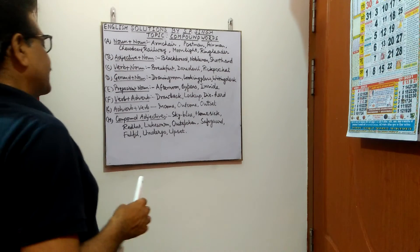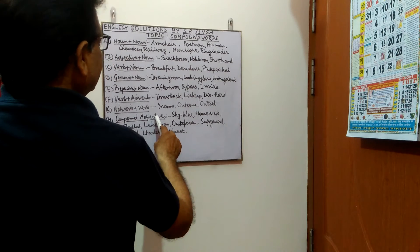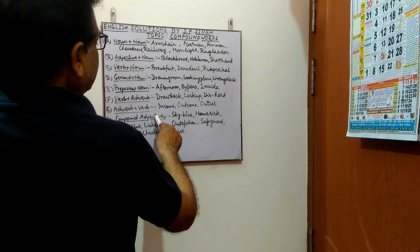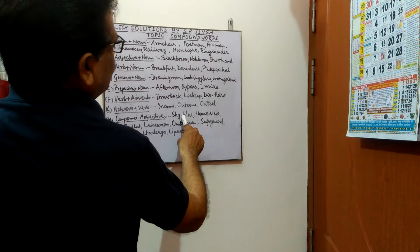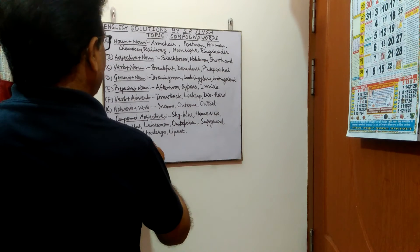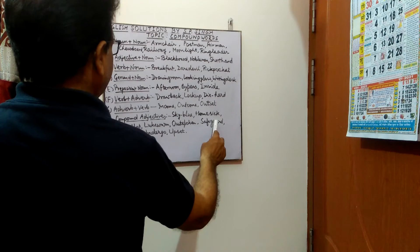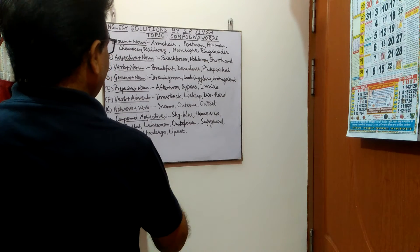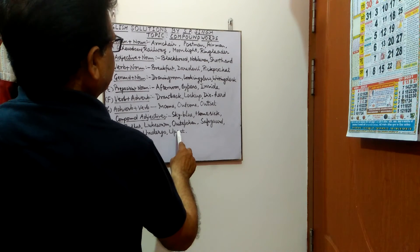The last category is compound adjectives. Some examples are: sky blue, homesick, red hot, lukewarm, outspoken, safeguard, fulfill, undergo, and upset.